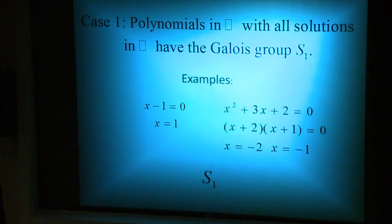The first case to look at is when a polynomial has rational coefficients and rational solutions. Let's take a look at x - 1 = 0 and x² + 2x + 2 = 0. Both have coefficients and solutions that lie in the rational numbers. When these conditions are met, the only possible permutations upon the rational numbers is the identity. Therefore, the Galois group for these types of polynomials is the trivial group S1.